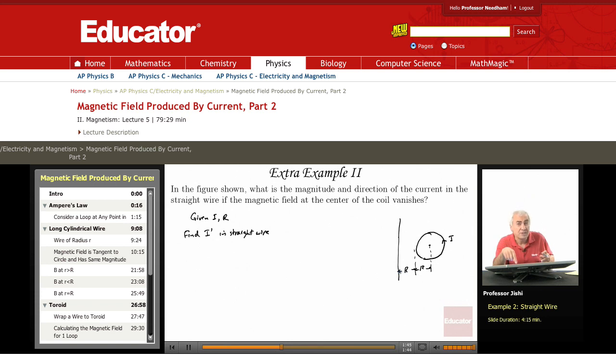So if I want the field to be zero at the center, this must produce a field into the page. So to produce a field into the page, by Ampere's law, I have to put the current up.